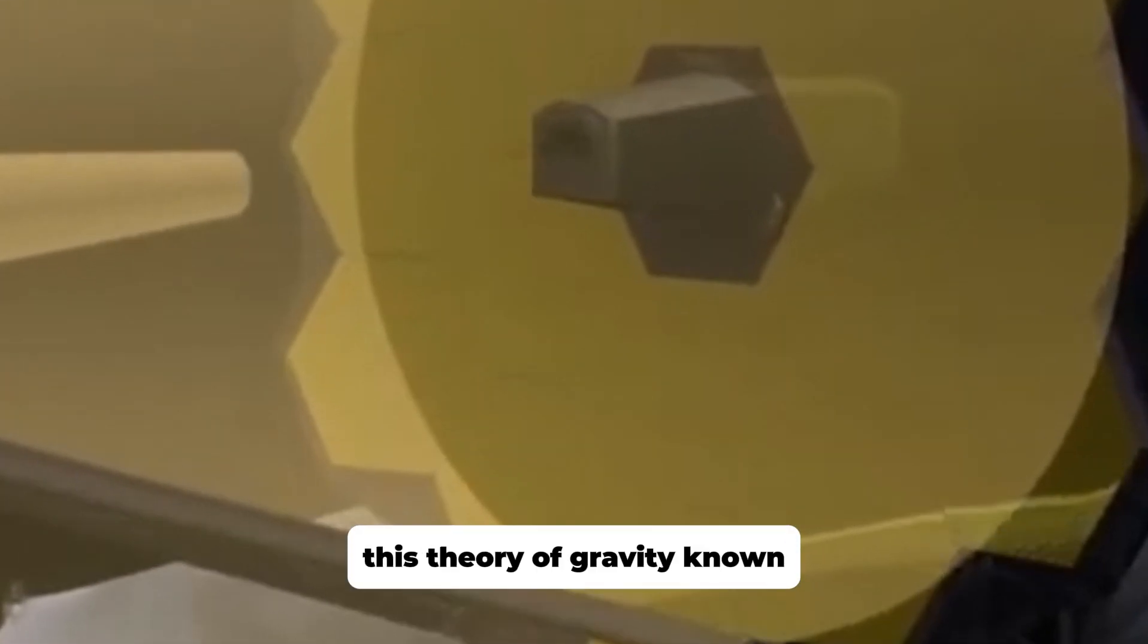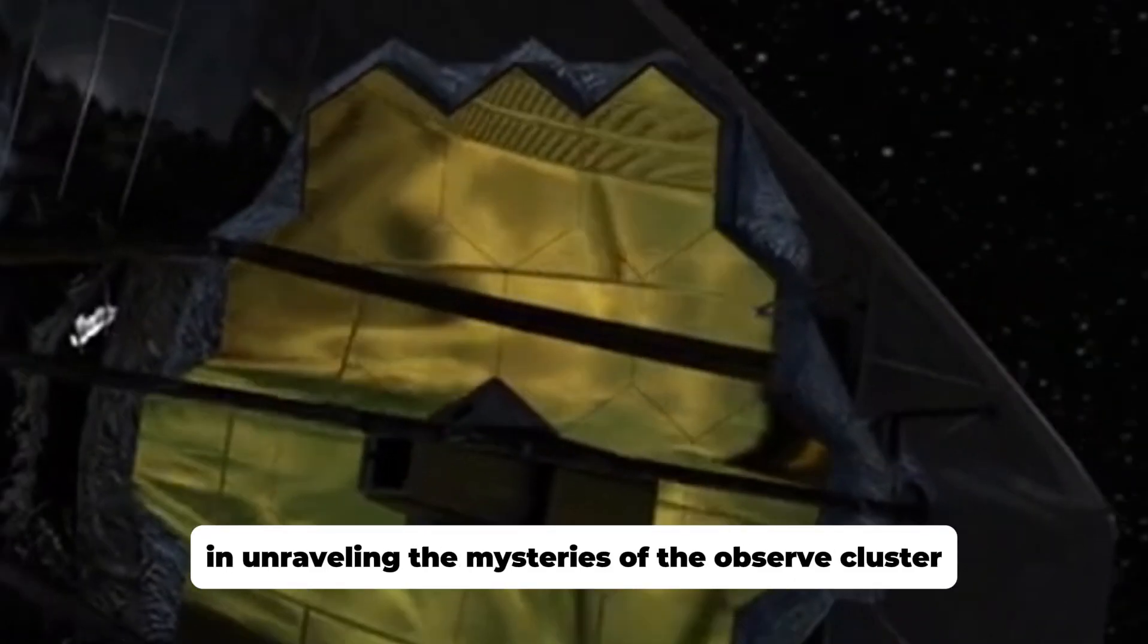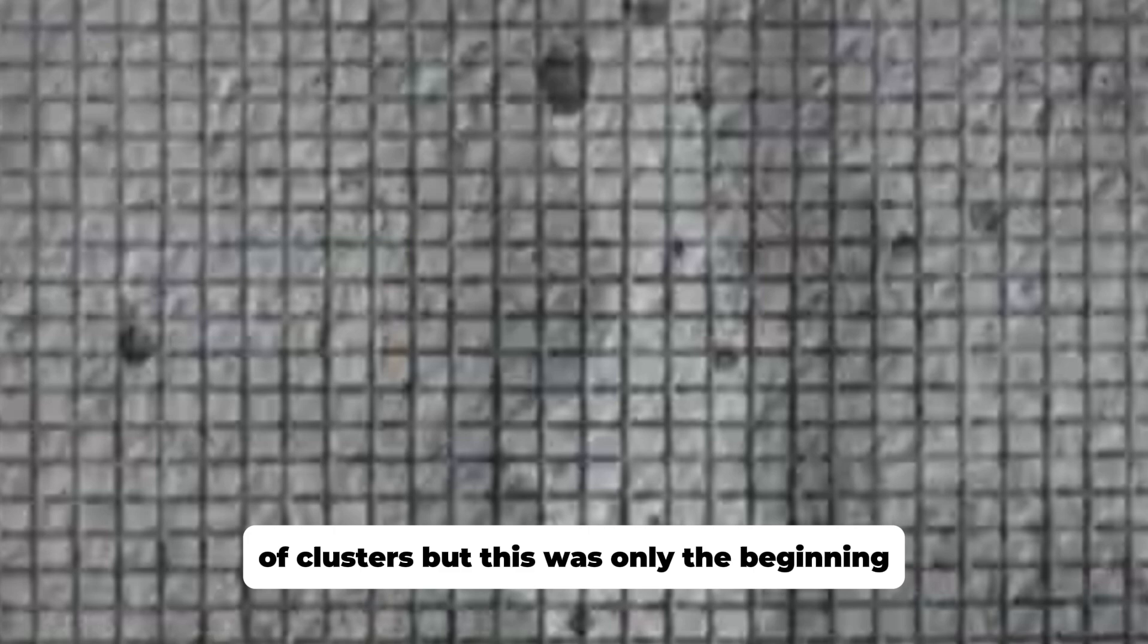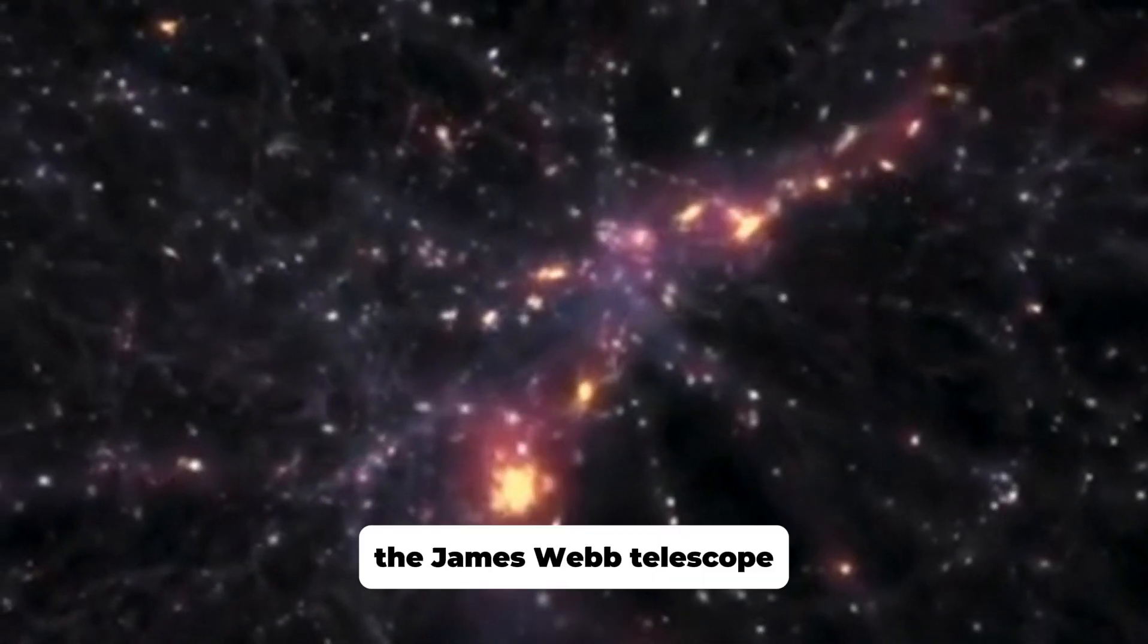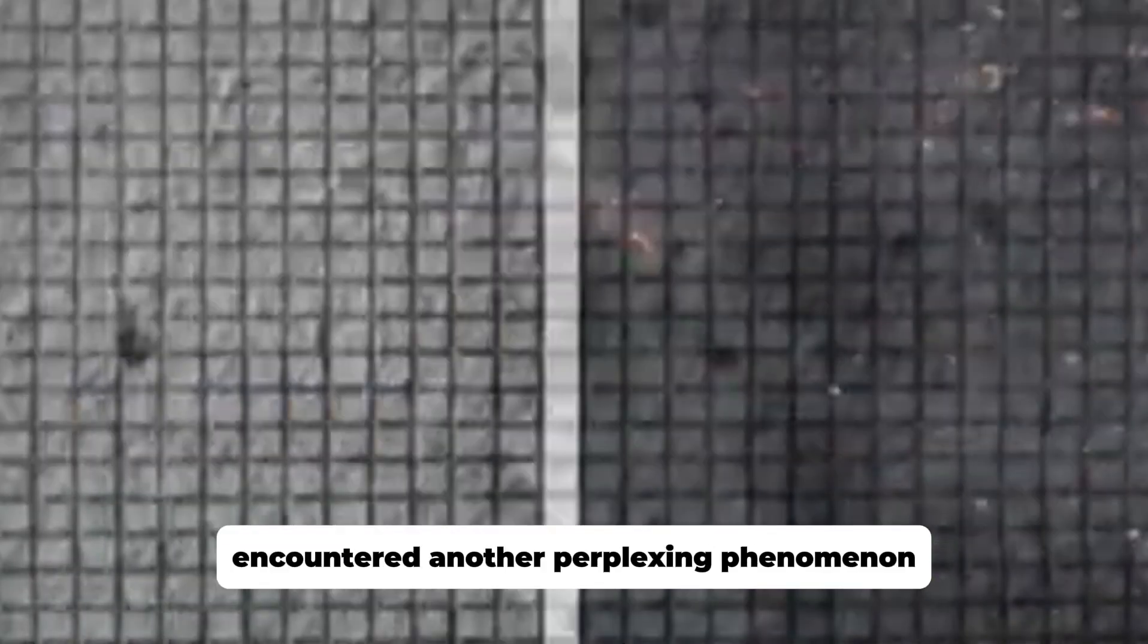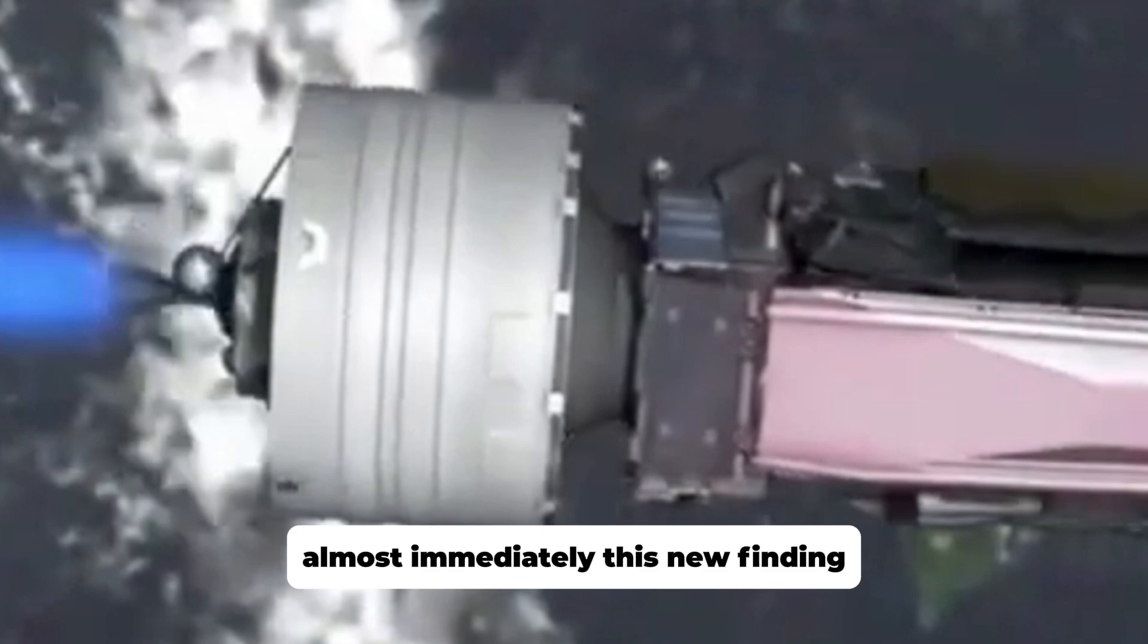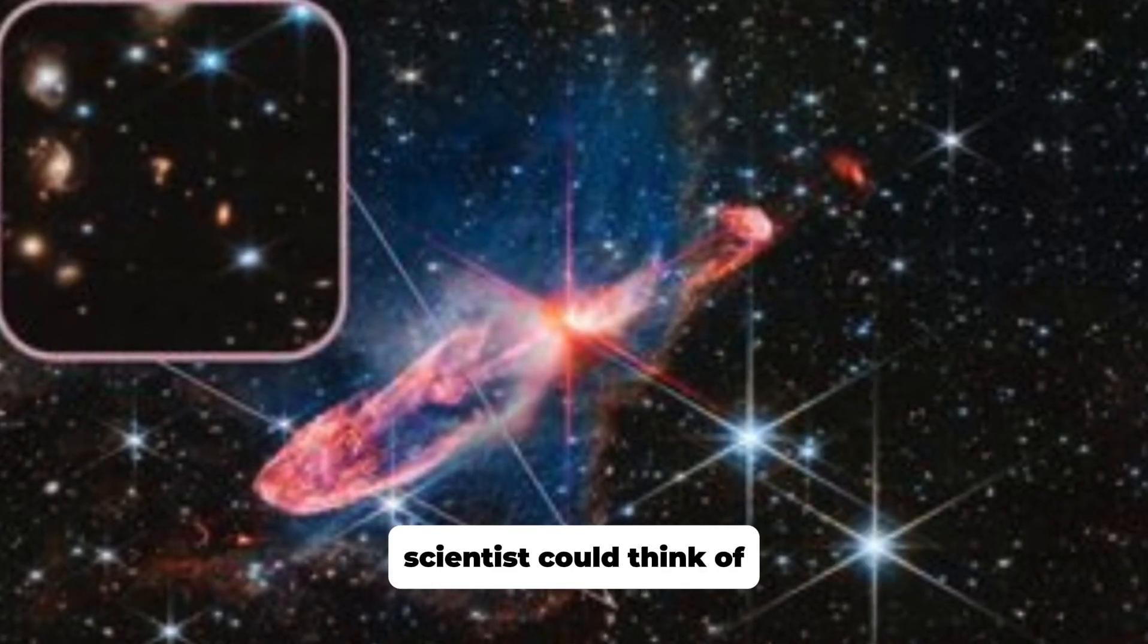While our highly advanced technology played a crucial role in capturing this stunning celestial sight, astronomers also relied on a natural phenomenon proposed by Albert Einstein in his groundbreaking 1915 work on general relativity. This theory of gravity, known as general relativity, played a vital role in unraveling the mysteries of the observed cluster of clusters. But this was only the beginning. Beyond the awe-inspiring discovery, the James Webb Telescope encountered another perplexing phenomenon that defies every scientific explanation.